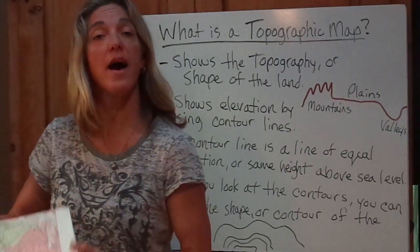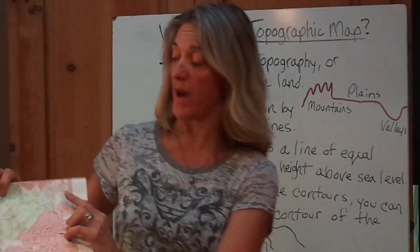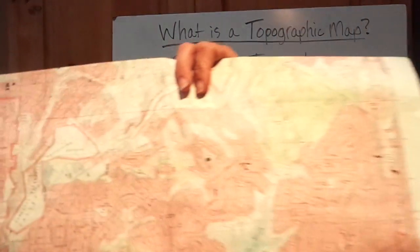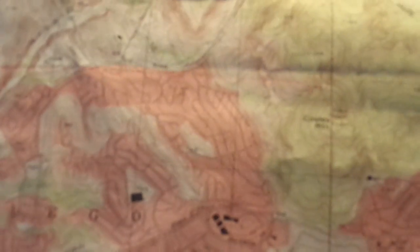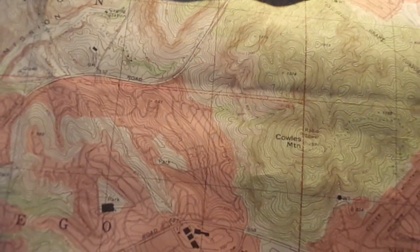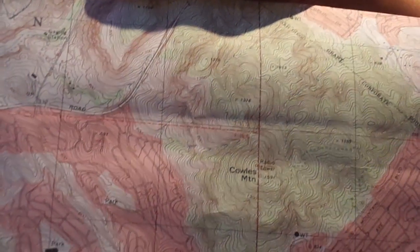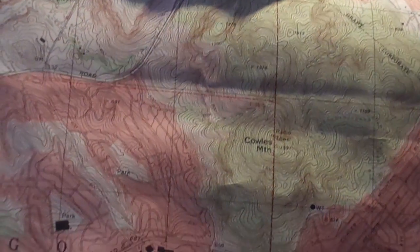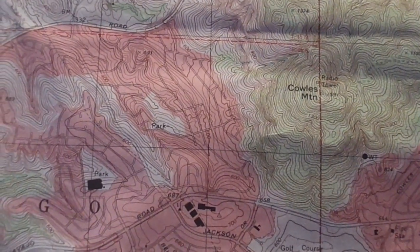Tomorrow you'll be working with these maps in class, so you'll get to see a whole bunch of contour maps and contours on topographic maps. Right here is a map of Cowell's Mountain, which is a mountaintop right close to where we live. A lot of people hike it — there's even a road up to the back and radio towers on top. All those squiggly lines are showing the shape of the land.